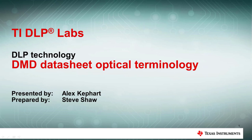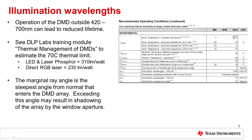In this TI DLP Labs training module, we will cover some of the common optical terms found in DLP Digital Micromirror Device, or DMD, data sheets. DLP DMDs are qualified over a specific wavelength range. Standard display DMDs assume a white light spectrum, where the light is between 420 and 700 nanometers. Operating the DMD outside this range can lead to a reduced lifetime.